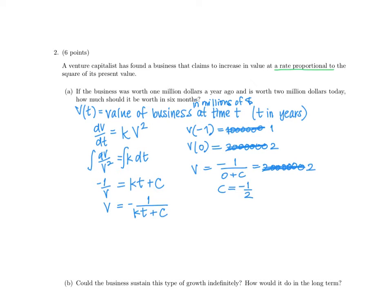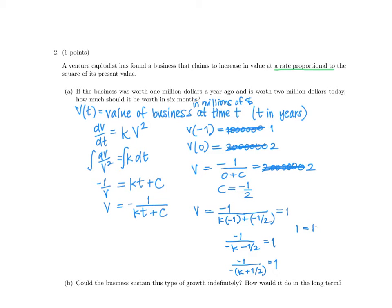Using the other condition V(−1) = 1, we plug in T = −1: negative 1 over (K·(−1) + (−1/2)) equals 1. Rewriting: negative 1 over negative K minus 1/2 equals 1. Factoring out the negative: 1 over (K + 1/2) equals 1. Cross-multiplying gives 1 = K + 1/2, so K = 1/2. Now we have both constants determined.